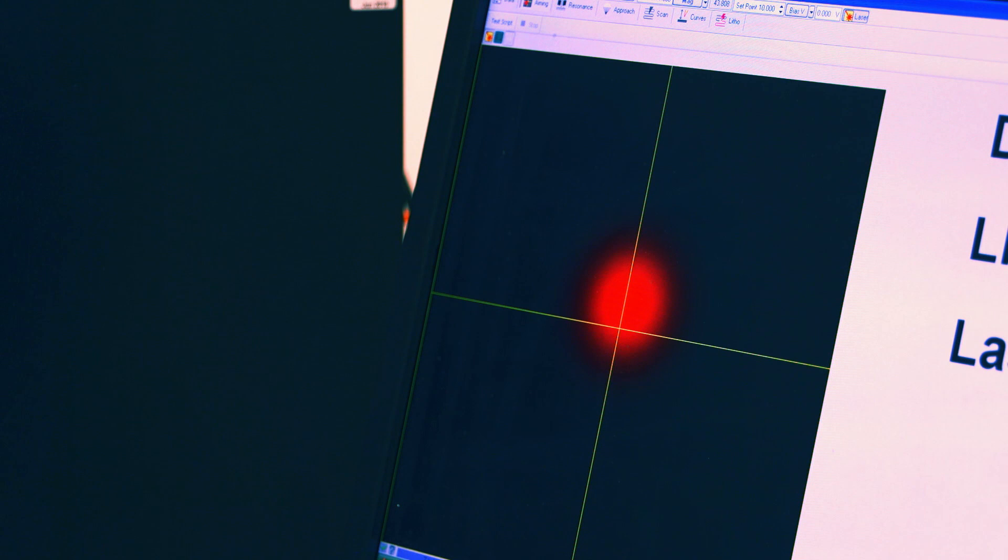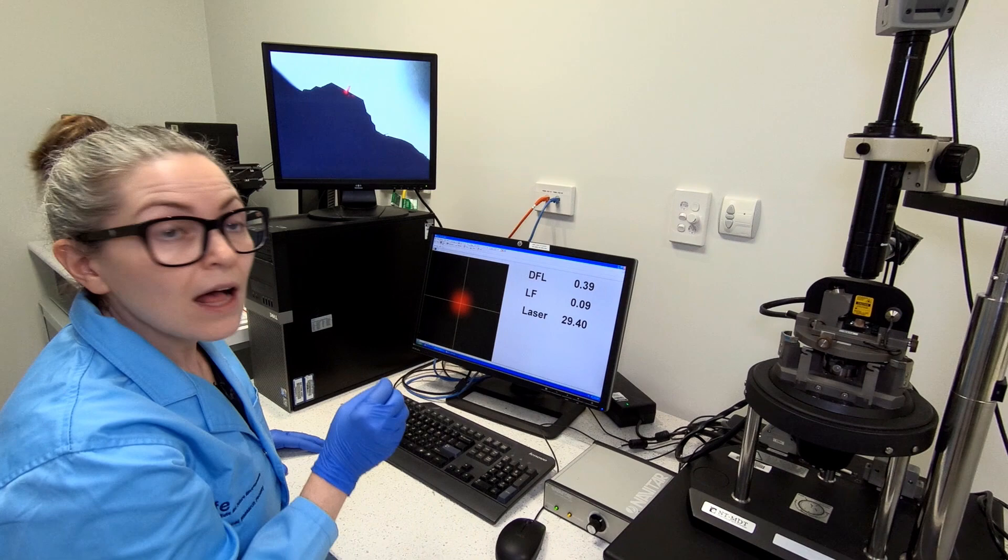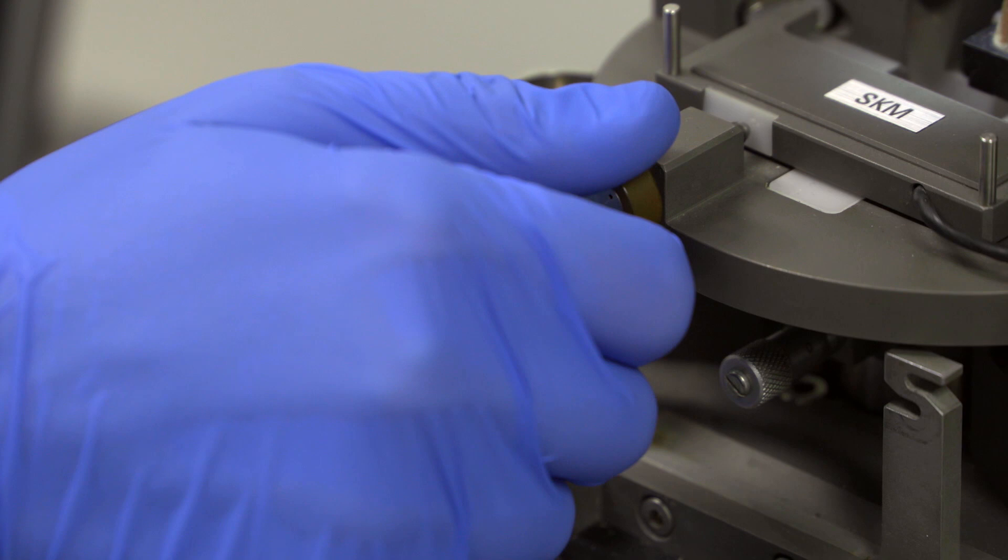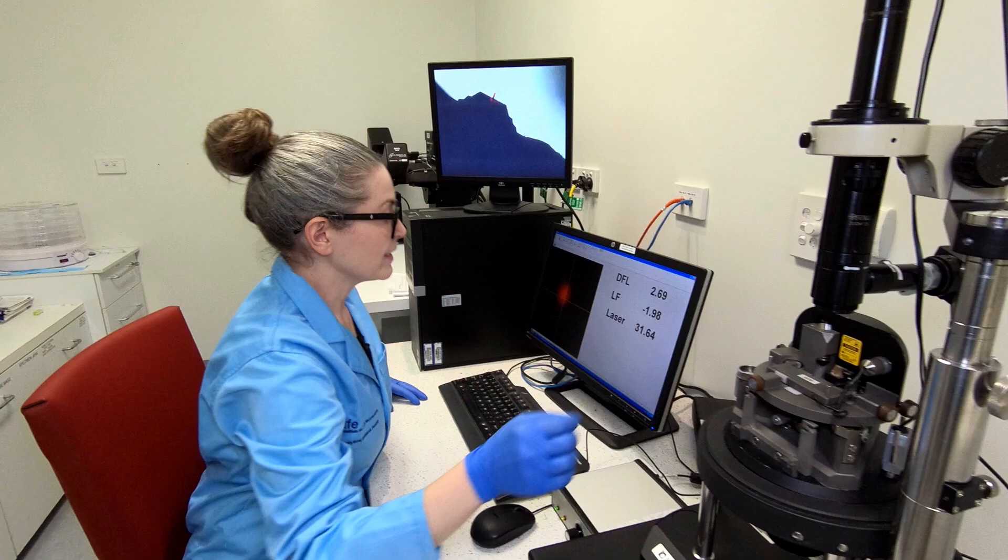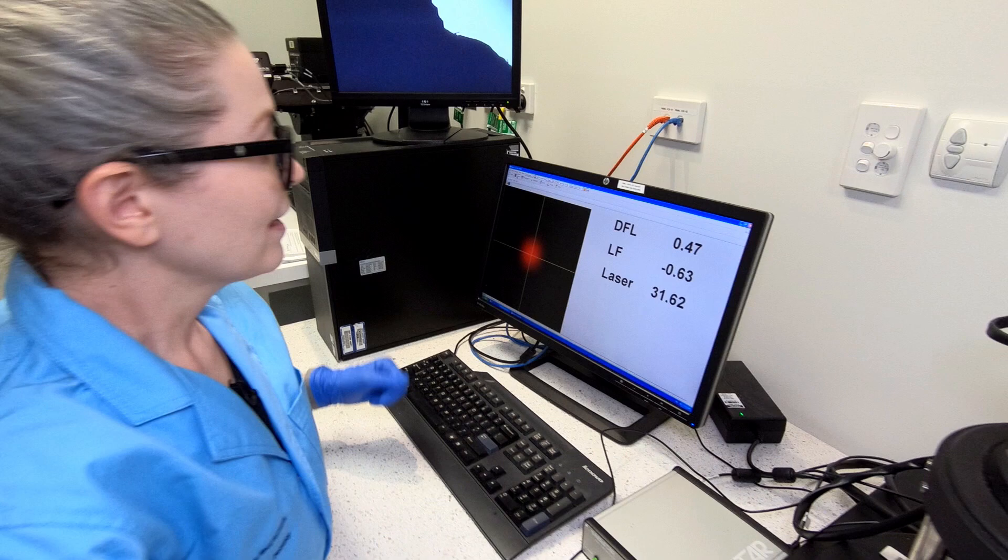Our software lets us see the laser signal in that four quadrant detector. What we can do now is try to optimize the reflection of the laser off the cantilever by moving the cantilever a bit. This is giving us a little better intensity, but we've moved the reflection off the center of our four quadrant detector. That's fine because we can move the detector a bit too. Now we've got a nice strong laser signal centered in our detector. That's exactly the way we want to start the experiment.